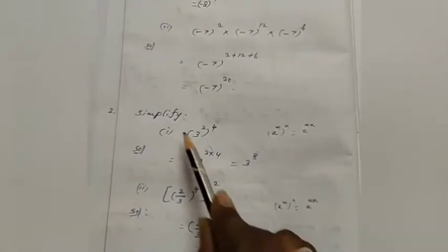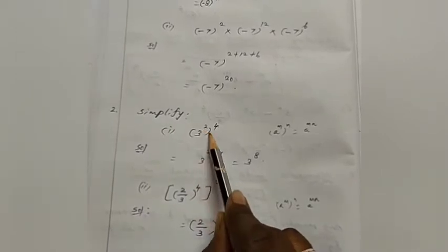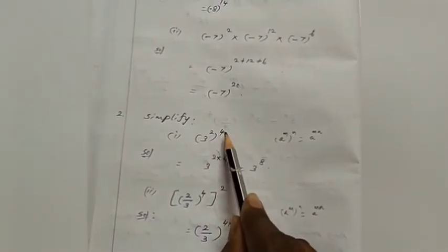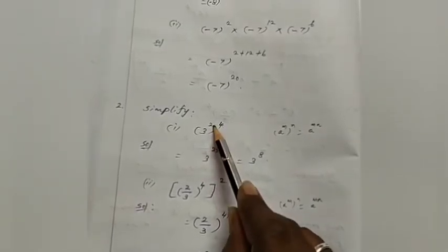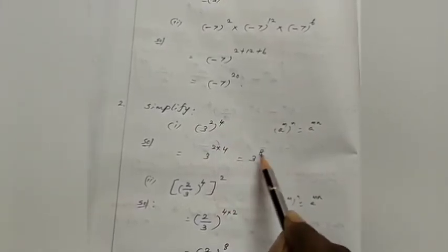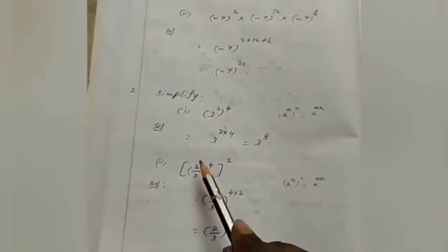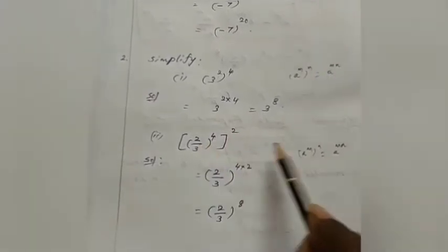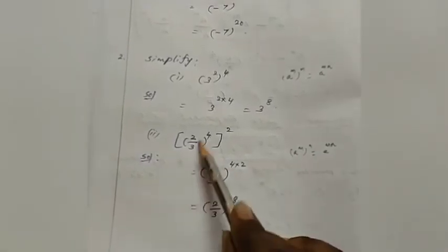Second example: minus 7 whole square into minus 7 whole power 12 into minus 7 whole power 6 — bases are the same, it is multiplication, so we get minus 7 whole power 2 plus 12 plus 6. Since 2 plus 12 plus 6 equals 20, the answer is minus 7 whole power 20. Next question: simplify 3 power 2 whole power 4. Using the law a power m whole power n equals a power m into n, we get 3 power 2 into 4 — 2 fours are 8 — so the answer is 3 power 8. The second part: 2 by 3 whole power 4, the whole power 2, gives 2 by 3 whole power 4 into 2 — 4 twos are 8 — so the answer is 2 by 3 whole power 8.